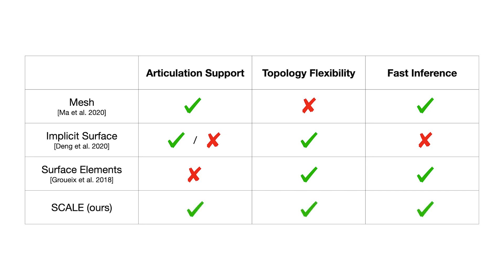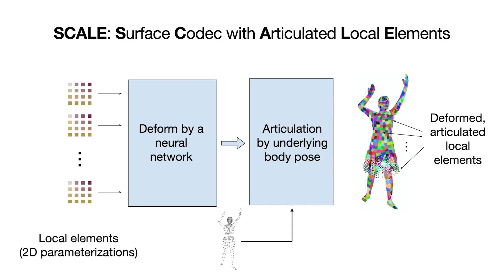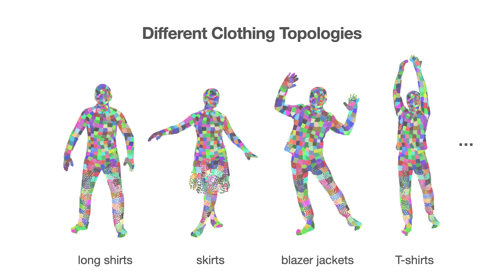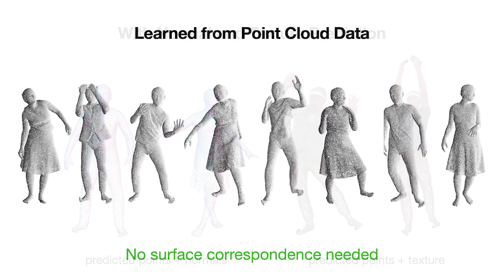In this work, we introduce SCALE, which meets all the requirements above. SCALE represents clothed humans with hundreds of local surface elements parameterized by a neural network. Each element is articulated by the underlying body pose and is fast to evaluate. By combining a large number of elements, SCALE can also represent different topologies in a unified manner. Surface normals and texture can also be modeled so that meshing and rendering can be applied. In addition, SCALE can be learned from raw point clouds without surface correspondence.